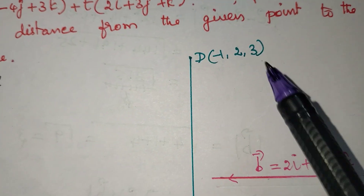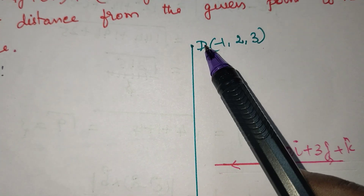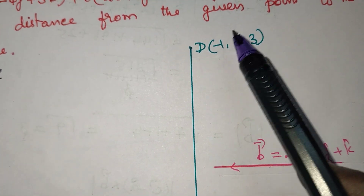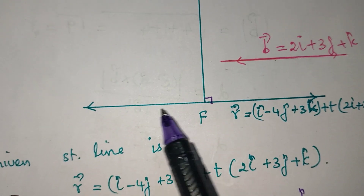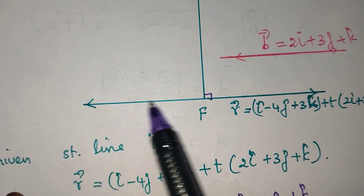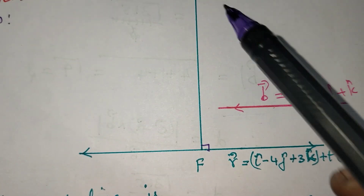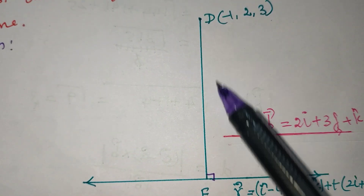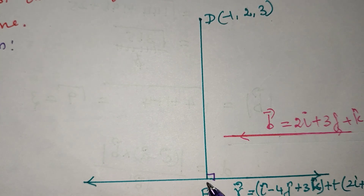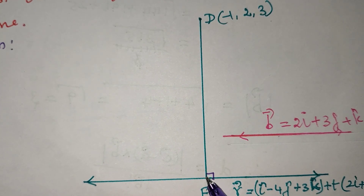How to calculate? The point is given as the equation, and the line is given as the equation. From this point, we drop a perpendicular line.